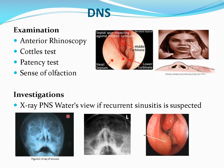Investigations required: X-ray PNS water view is helpful — we can see all the sinuses, so associated complications of DNS can be identified. On this X-ray you can see a sharp deflection, which is a spur, haziness of the maxillary sinus as well as the frontal sinus. The endoscopic view shows the spur, deflected nasal septum, middle turbinate, and inferior turbinate.